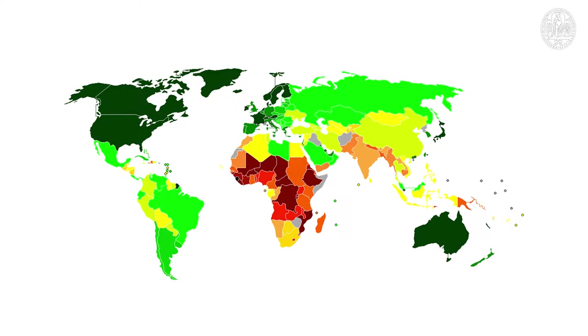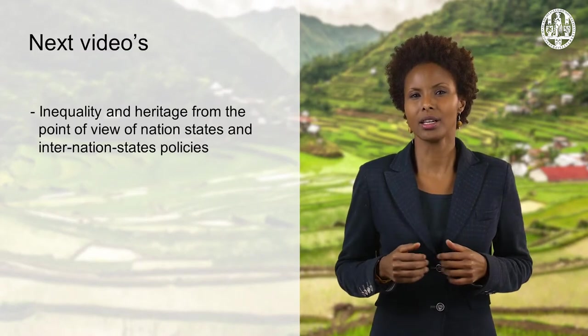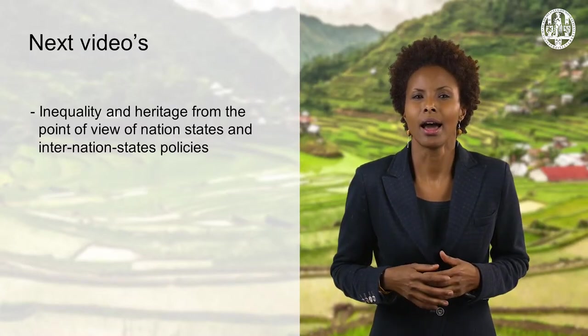Where we have the least heritage represented, we also have the most poverty. Obviously this is a generalization. However, diversity is not only an issue for non-Western cultural heritage, but also the Western heritage represented in the list is arguably lacking diversity. Many of the European sites are Christian cathedrals and Greco-Roman architecture. While diversifying the notion of heritage, the Intangible Cultural Heritage Declaration of 2001 seems to again perpetuate the same inequalities. The nations listed are mostly the same countries that already have strong representation in the World Heritage List. In the upcoming videos, we will further discuss inequality and heritage from the point of view of nation-states and inter-nation-state politics.